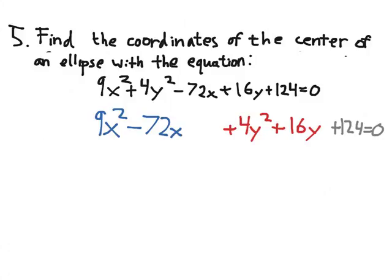Now, we can't complete the square when we have a coefficient in front of the squared term. So, let's factor out a 9 for the X's. And that'll leave us with X squared minus 8X.